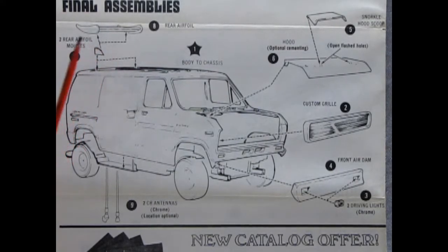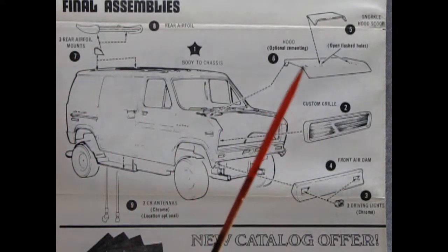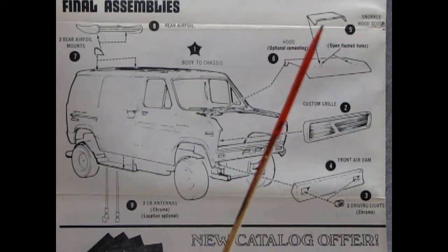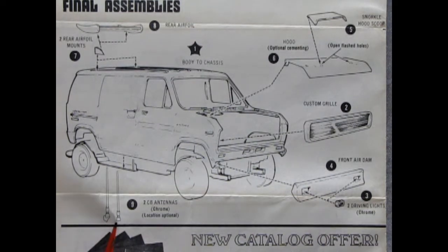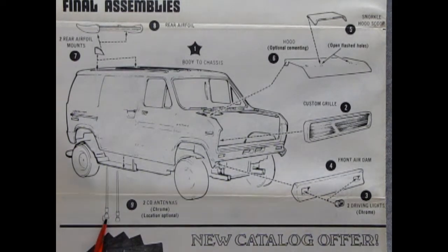That brings us to our final assembly. Look up here you got this nice rear airfoil spoiler with some mounting brackets. And then you got your Ford hood and there's that nice hood scoop for catching the chickens in. And then we've got our custom grill and this front air dam with these really cool looking driving lights so that you can see the road down below. And then what do we got here? Whoa! It looks like two CB antennas. Your choice, good buddy!